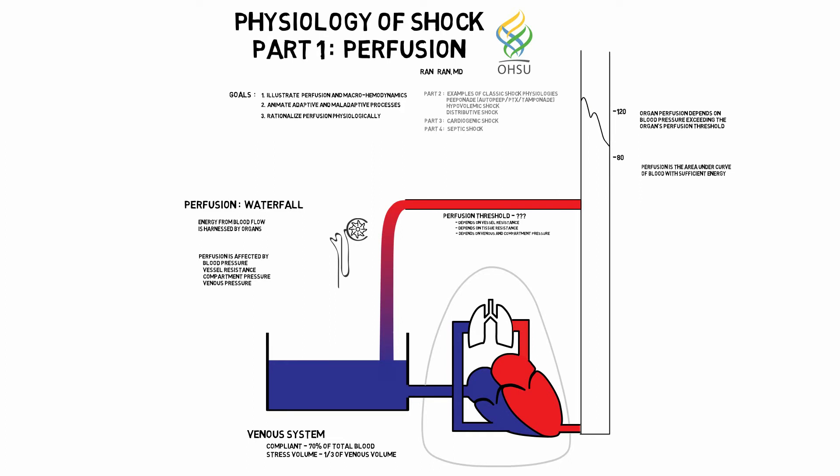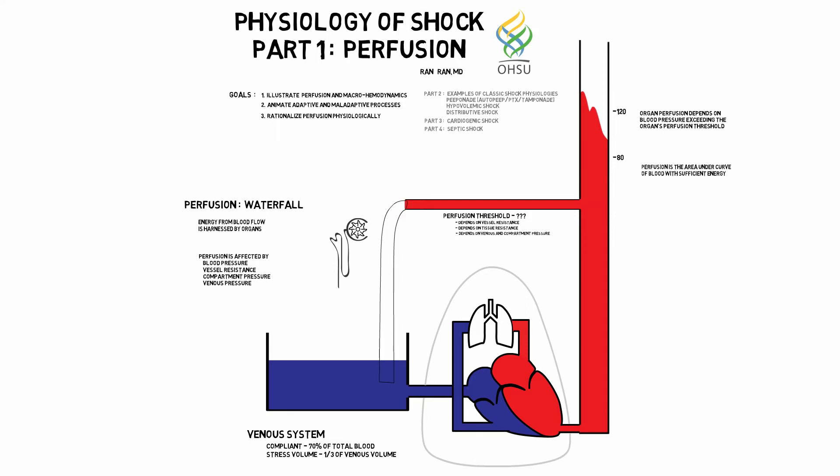Stress volume increases. The result is an increase in preload. And depending on where the heart is on the Starling curve, cardiac output increases. Even though cardiac output has an enormous effect on tissue perfusion, it actually has a very small effect on stress volume, because the arterial compartment contains much less blood than the venous compartment. Think of it as flow of water into a bathtub half full.